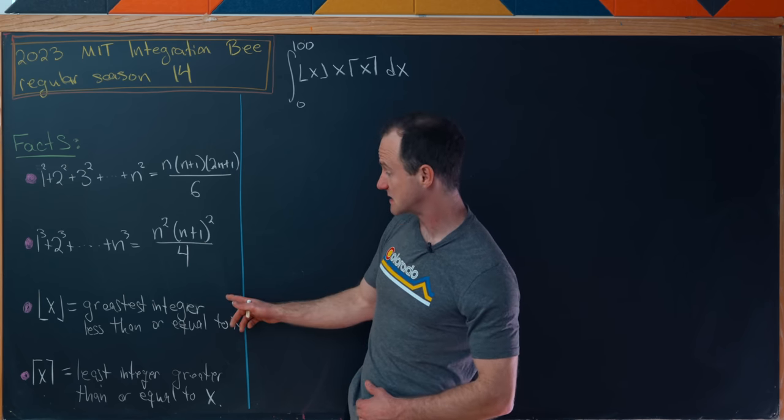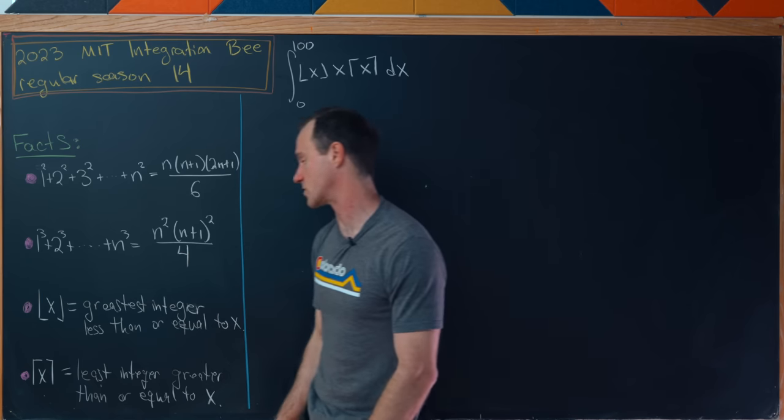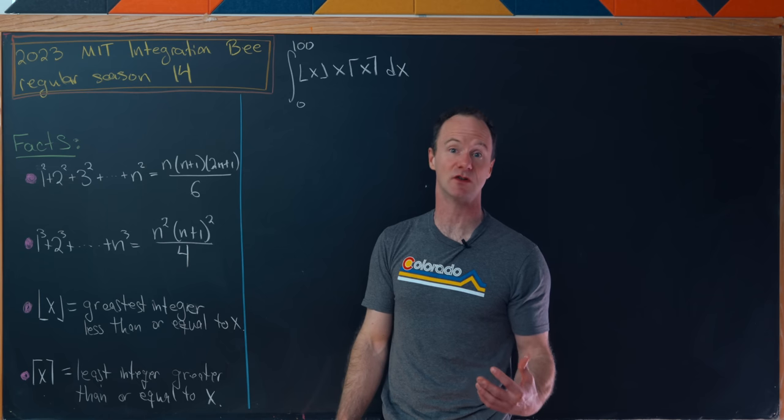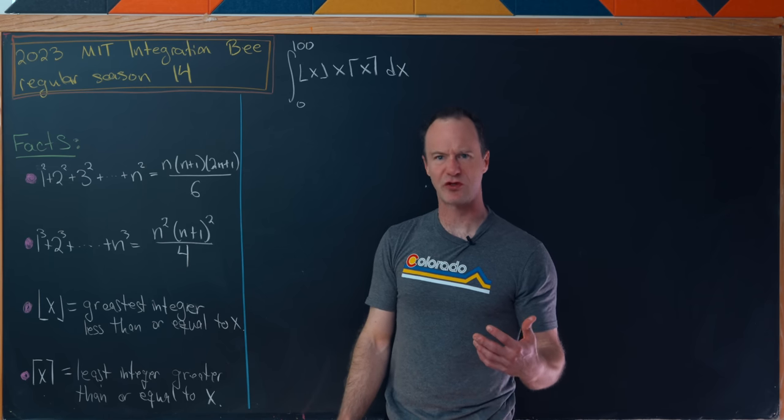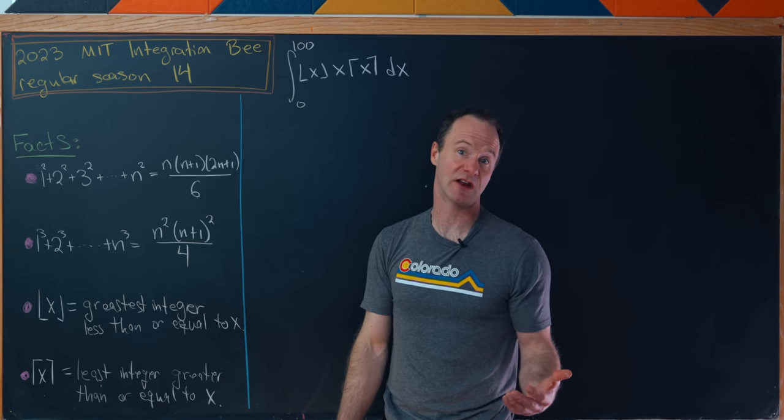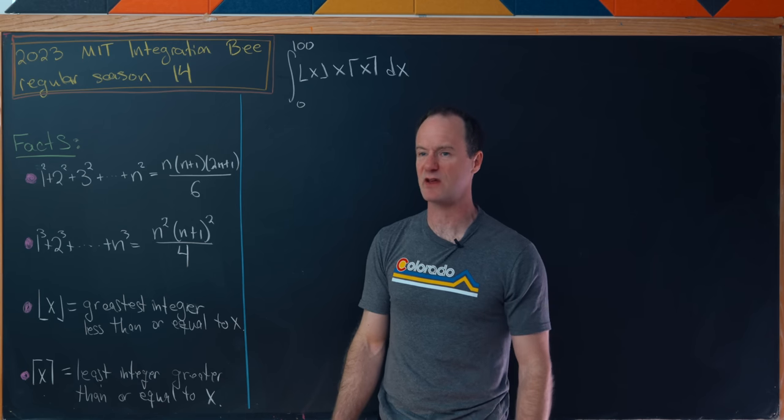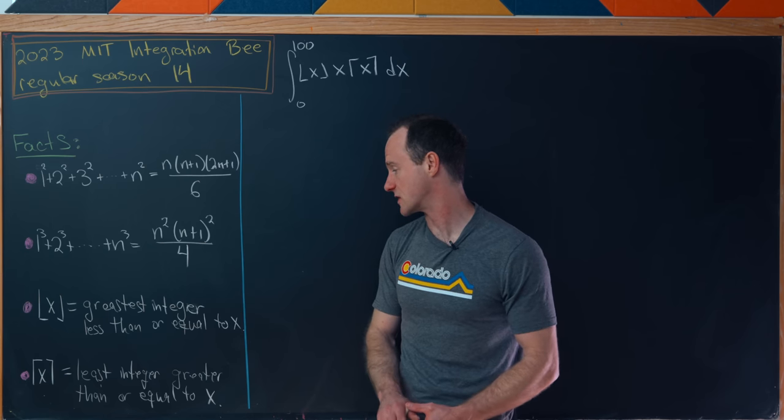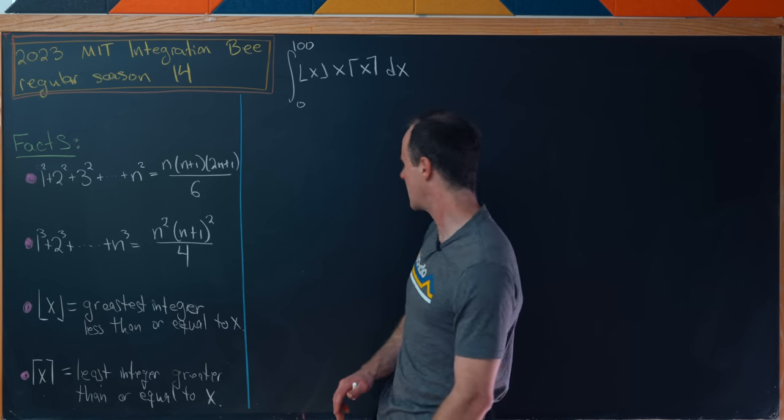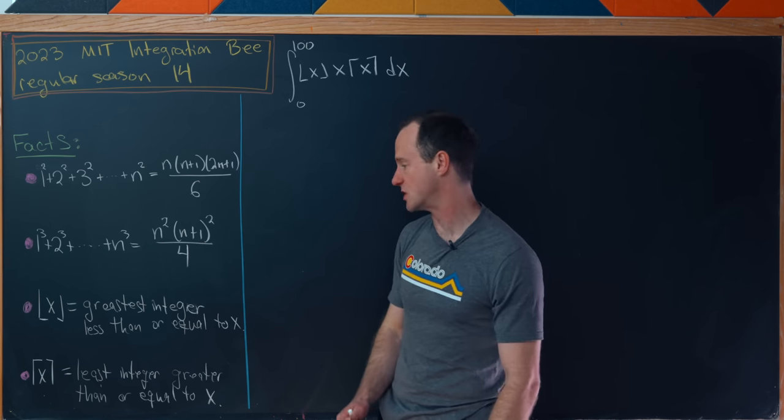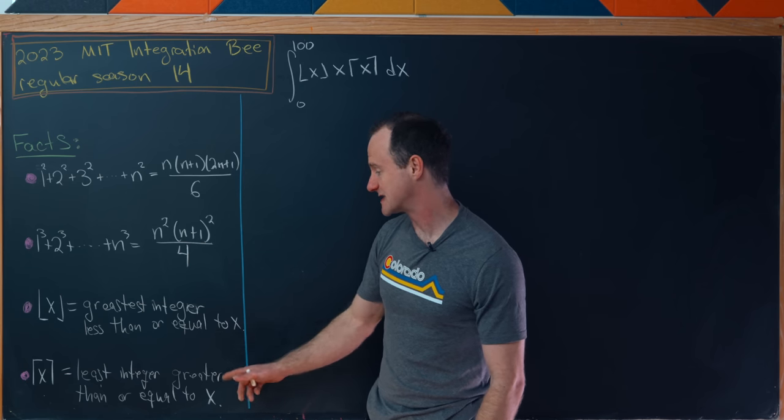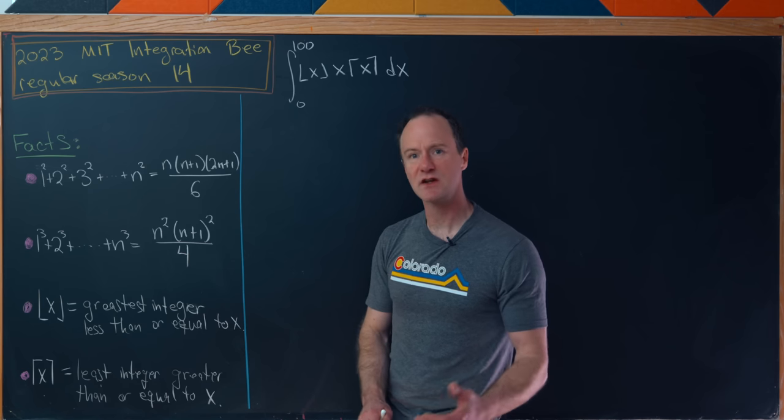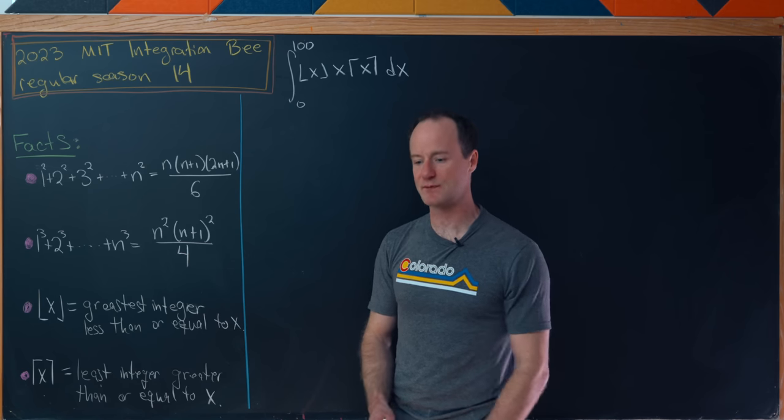And then next is the floor function or the greatest integer function. You can think of this as like an elevator downstairs to the closest integer. So 3 and a half would take the elevator downstairs to 3. The floor of 3 and a half would be 3 and so on. This is the greatest integer less than or equal to x. And then there's the dual function which is the ceiling function, the least integer greater than or equal to x. So that's like an elevator upstairs.